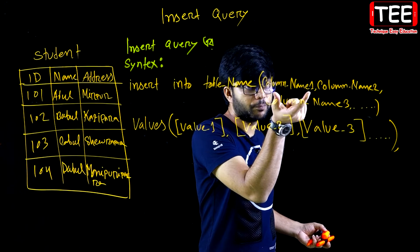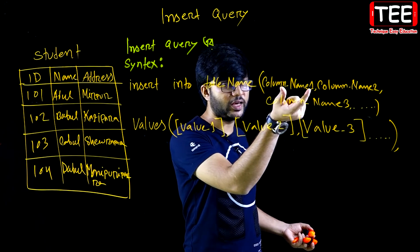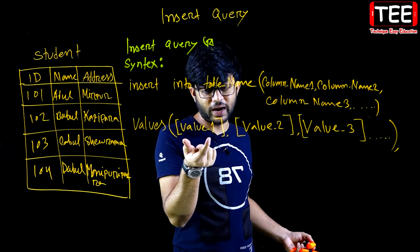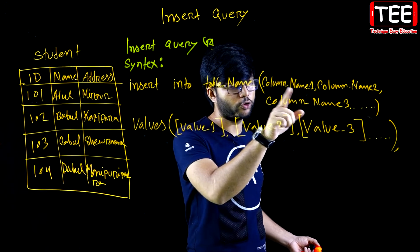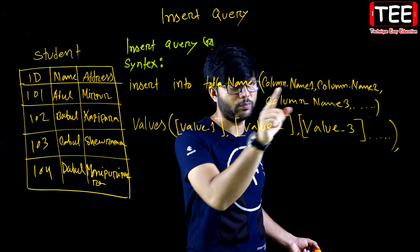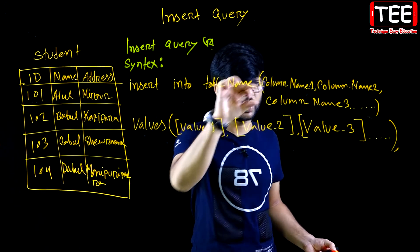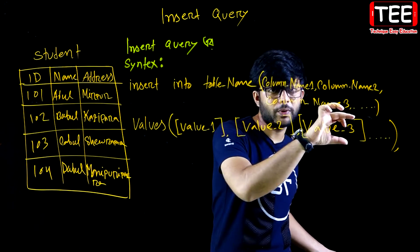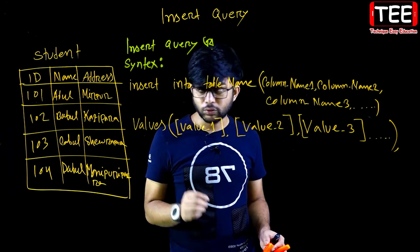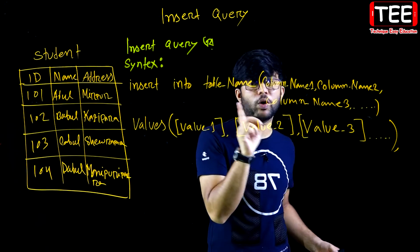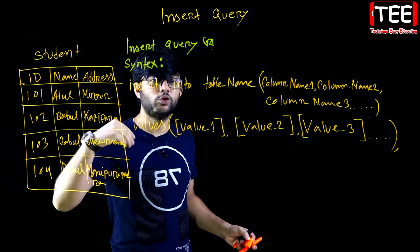So the first value you write will go to the first column. The second value will go to the second column. Each value maps to the corresponding column in the order they are defined. This is the way to write the values in the INSERT statement.